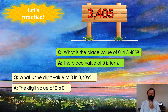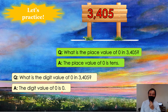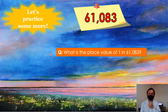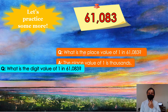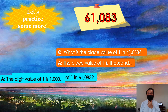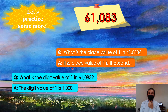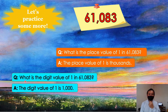What is the digit value of 0 in 3,405? The digit value of 0 is 0. Do you understand? Good. What is the place value of 0 in 61,083? The place value of 0 is hundreds.